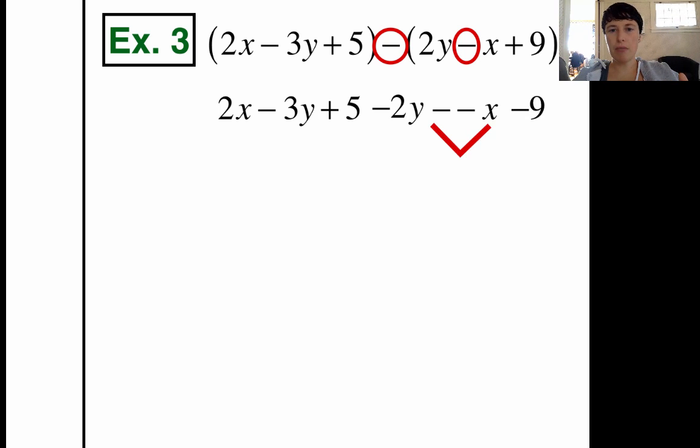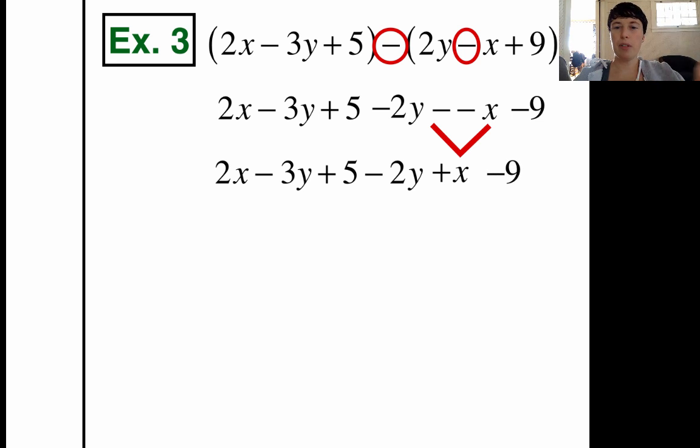So I'm going to fix that minus minus real quick and make that a plus x. But everything else is good, so I'm going to copy everything else down. 2x minus 3y plus 5 minus 2y minus 9. I'm going to put that whole thing down. Now put all your like terms together. So we got x's, we got y's, and we got numbers. So I'm going to put the 2x and the plus x together. I'm going to put the minus 3y and the minus 2y together. I'm going to put the plus 5 and the minus 9 together. And then I'm going to combine like terms.